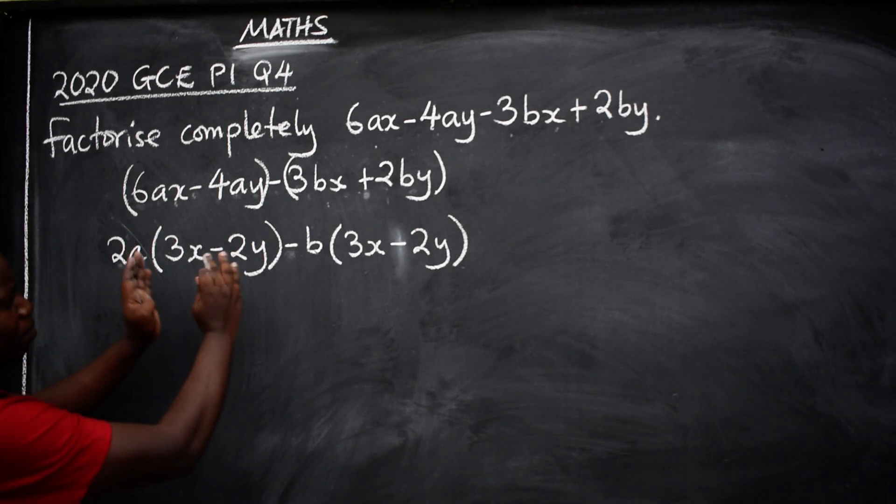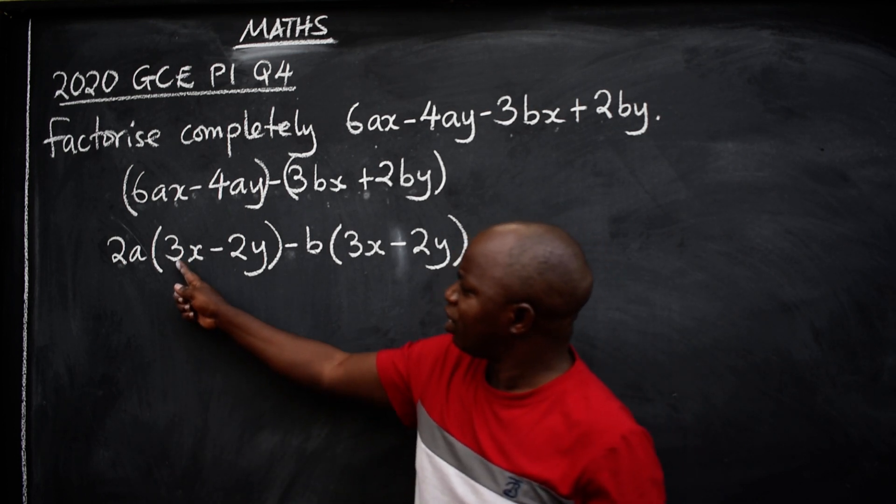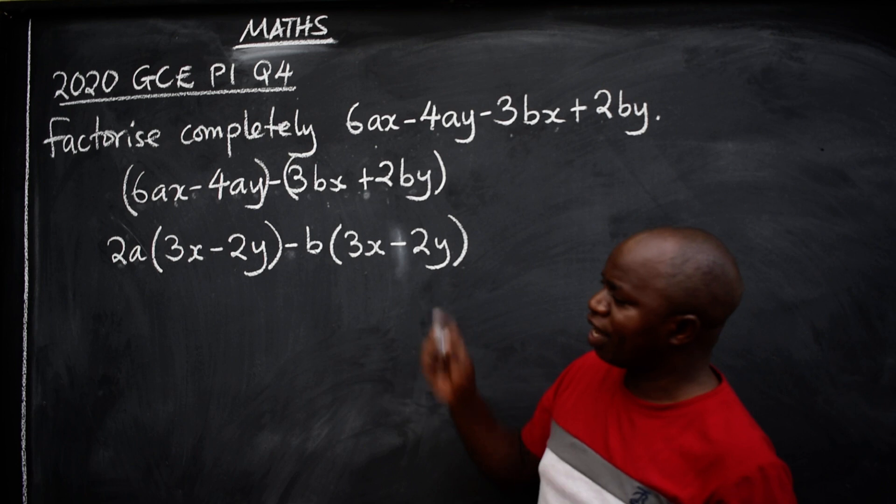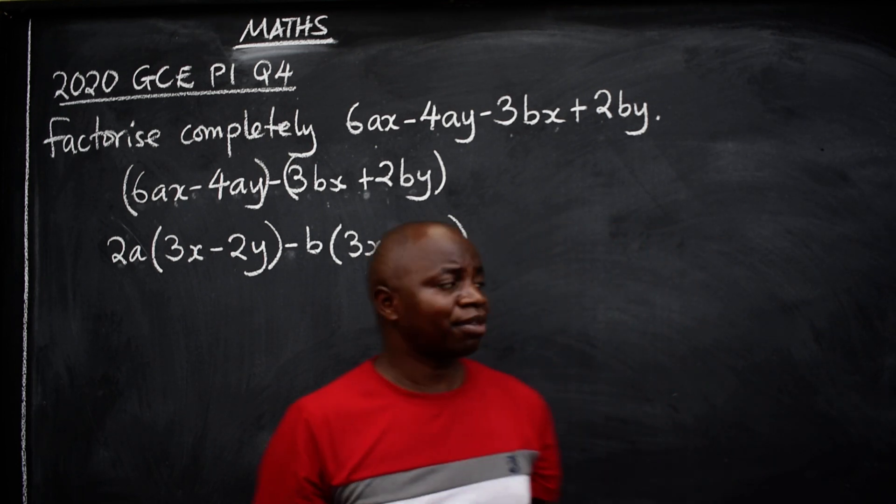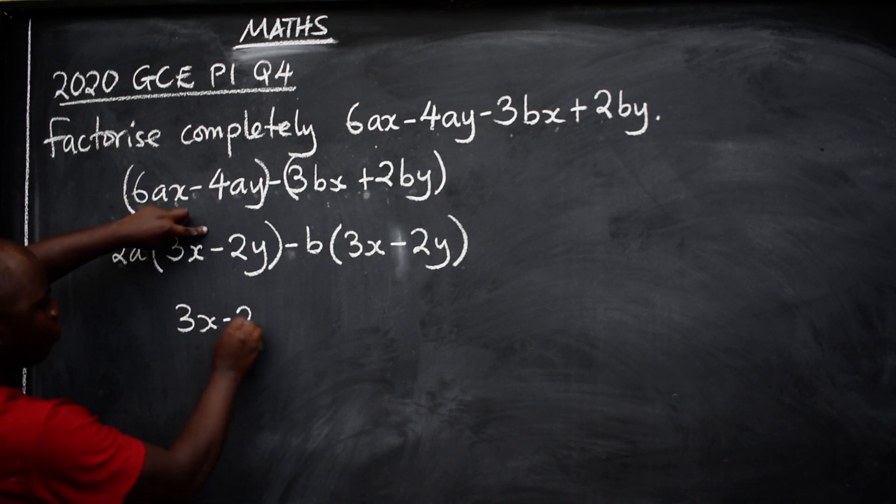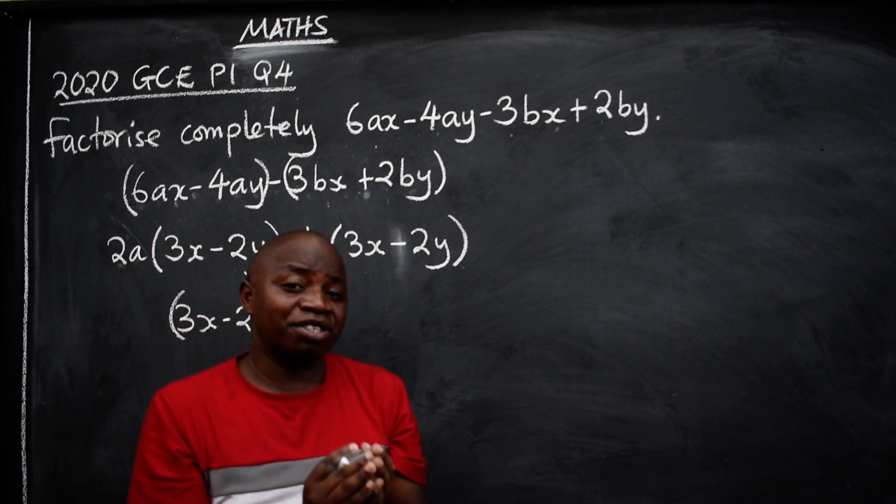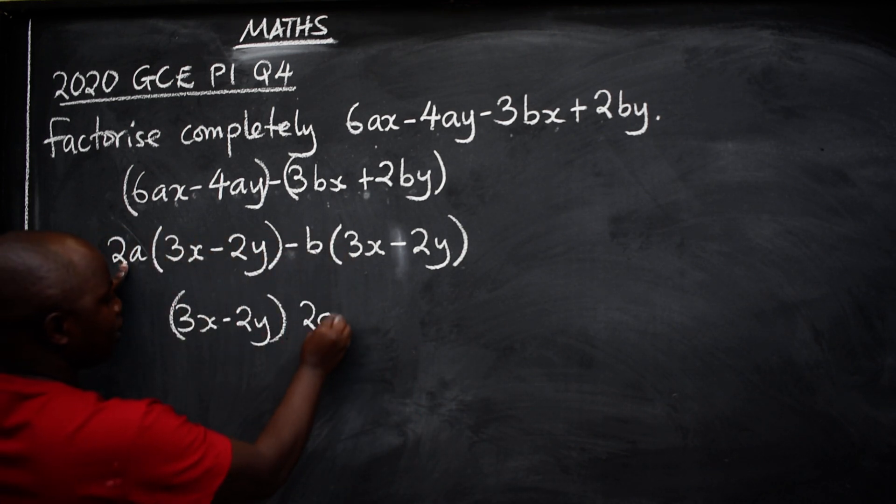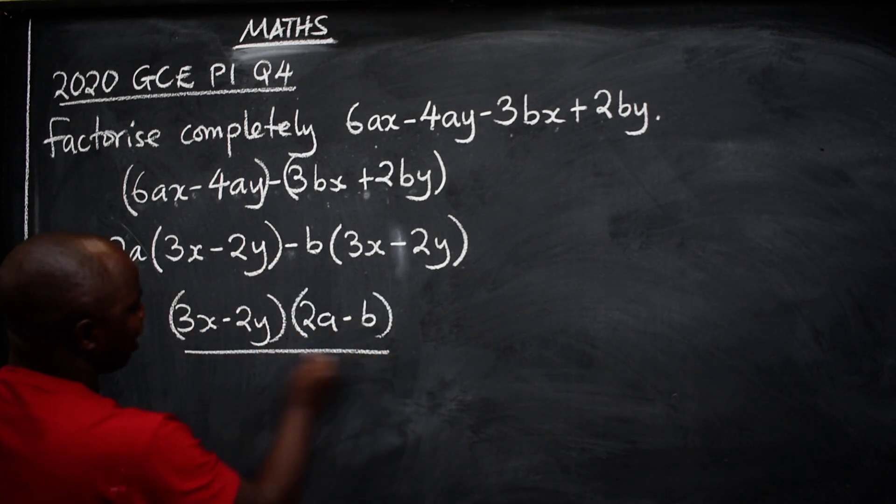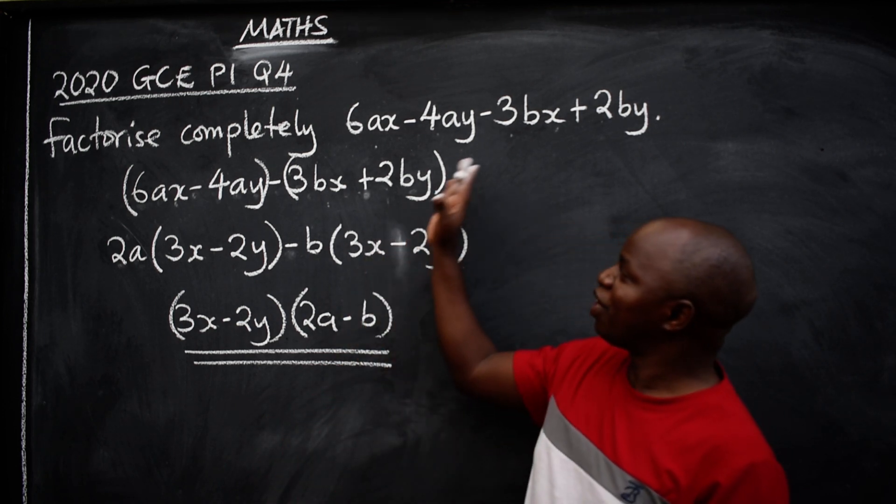Check what we have in brackets if they are the same. Are they the same? 3X minus 2Y. 3X minus 2Y. They are the same, right? Just pick one. 3X minus 2Y. Also pair those that are outside. So we have 2A minus B. Like this. You are done. 3X minus 2Y. That is the way we factorize by grouping.